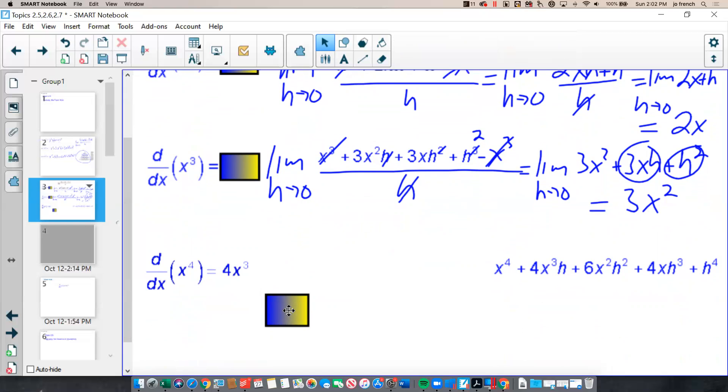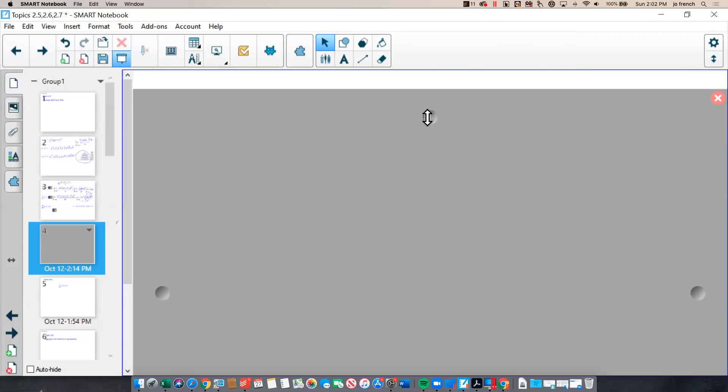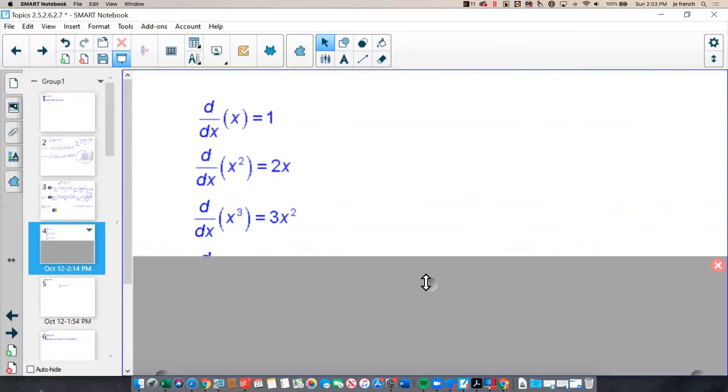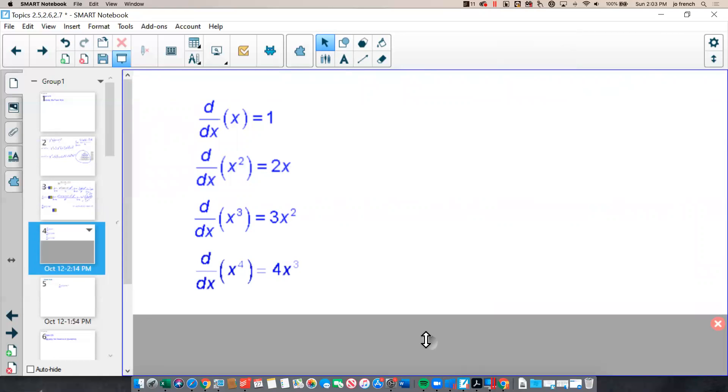So let's look at what we found out. First of all, if I look at the derivative of x, well, that's just a line with a slope of 1, so we know that that derivative is 1. And then we found out, as we looked at the derivative of x squared, that the derivative was 2x. And the derivative of x cubed was 3x squared. And then we took a look at the derivative of 4x, and we found 4x cubed. So we have derivative of x being 1, x squared, 2x, x to the 3rd, 3x squared, and x to the 4th, 4x cubed. I hope you're seeing a pattern here. If you see a pattern, maybe you can tell me what the derivative with respect to x of x to the n would be. What is this pattern that we're seeing?